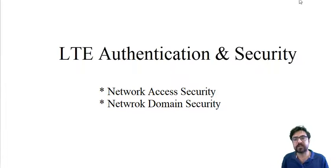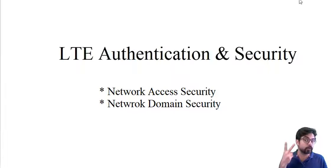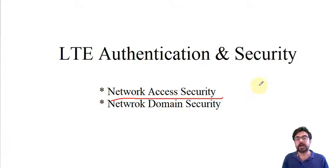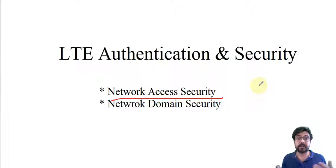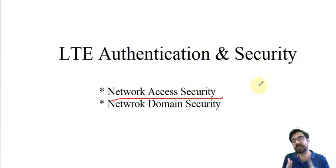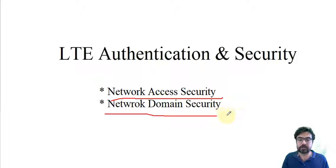Hi, this is Amin and in this video I'm going to talk about LTE authentication and security, which consists of two parts. The first part is network access security — it is the way that a UE or subscriber can access the network. In LTE it is via the air interface, and since it is the air interface, everyone has access to it, everyone can listen, spoof, sniff, and capture data. So security here is important.